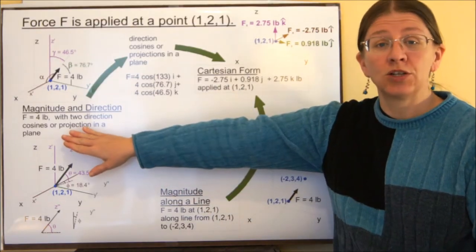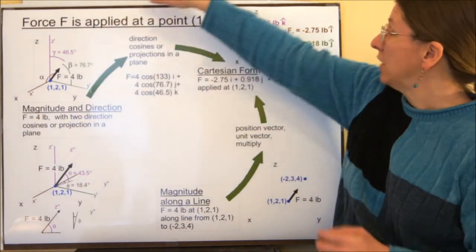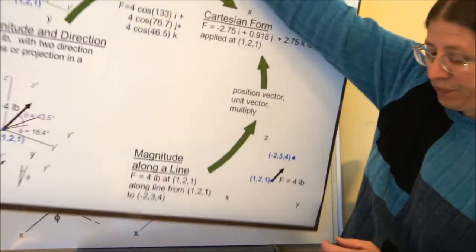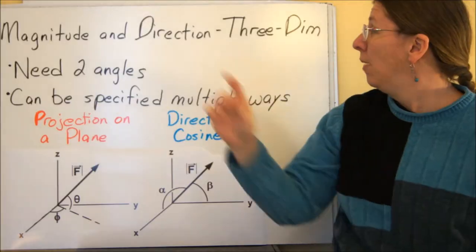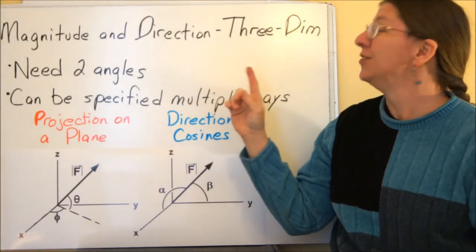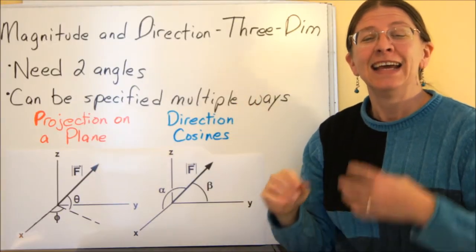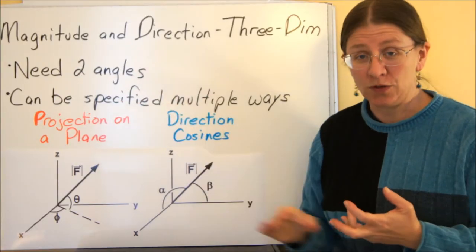What I want to talk about right now is magnitude and direction for a three-dimensional vector. Magnitude and direction in three dimensions gives you a magnitude, obviously, and two angles.